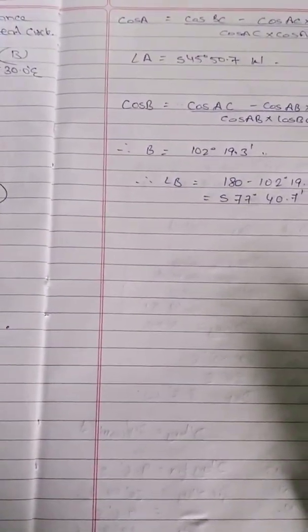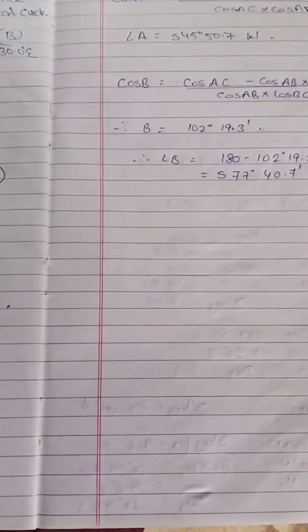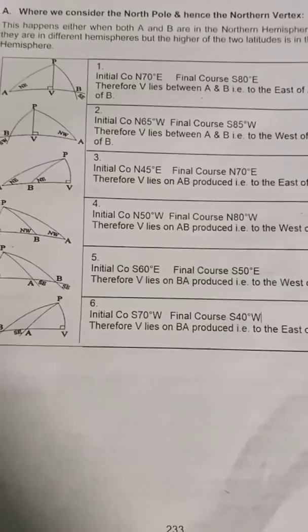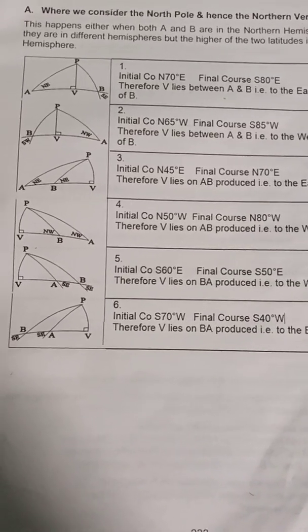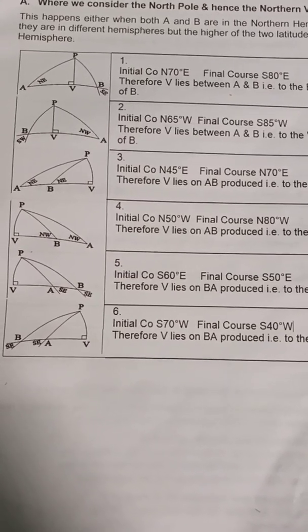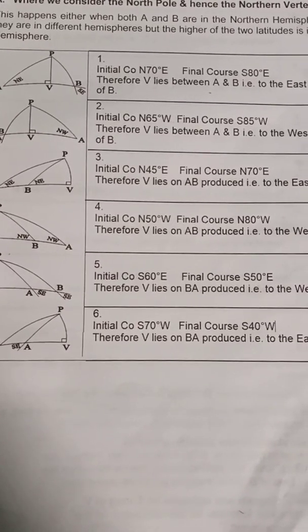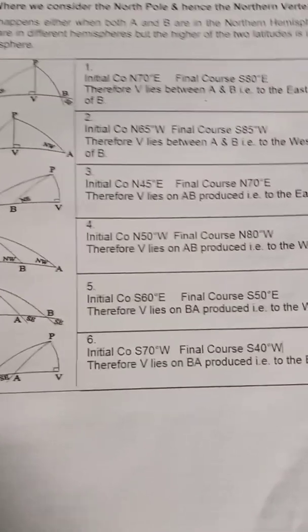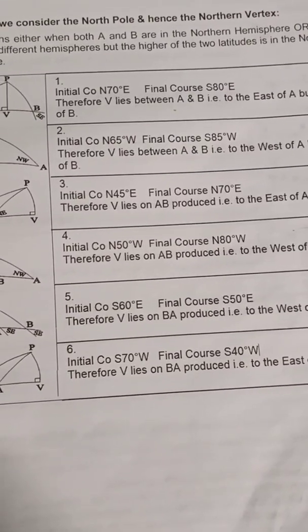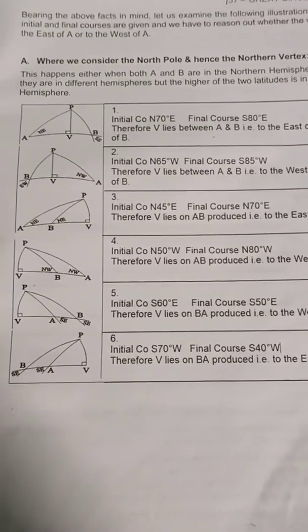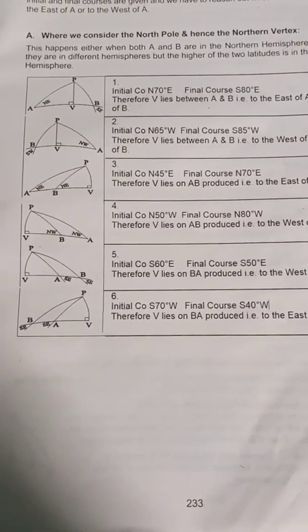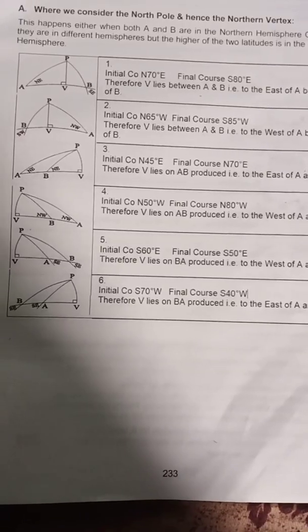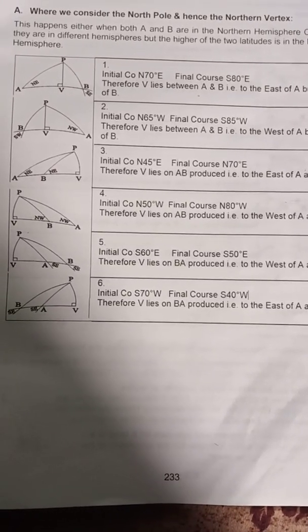Before finishing, let's understand the vertex. The vertex of a great circle is the point where the great circle reaches its maximum latitude — it is the peak where the great circle starts to curve or turn back down. We need to determine whether the vertex lies between A and B, or outside this track.